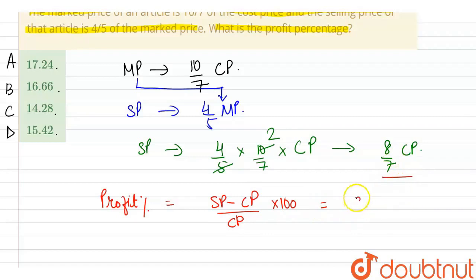Now, hum menei pata hai, SP ki value, ya haan 8 by 7 CP hai. So, 8 by 7 CP minus CP upon CP into 100.